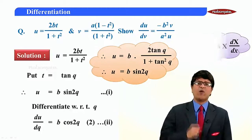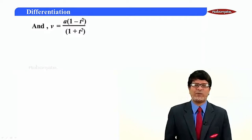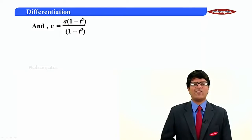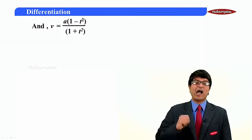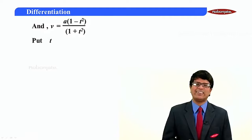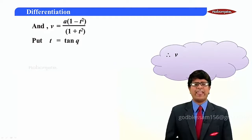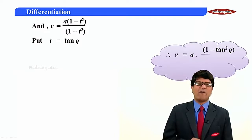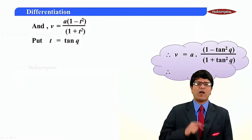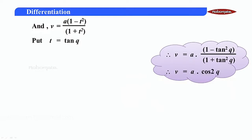Let us write v. v is equal to a times 1 minus t square upon 1 plus t square. Which compound angle formula does it look like? 1 minus tan square theta upon 1 plus tan square theta, which is nothing but cos 2 theta. So let us substitute t as tan theta. If I substitute t as tan theta, v is equal to a times 1 minus tan square theta upon 1 plus tan square theta, which is nothing but cos 2 theta. So v equals a cos 2 theta.